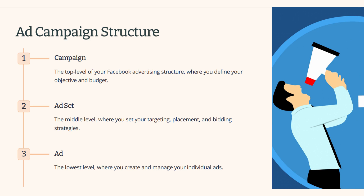At the middle level you set your ad set, which includes your targeting — for example, males in New Jersey between 25 and 35 years old who also like the gym. That's their interest. Your placement would be on Facebook, Instagram, and Messenger, and then you set your bidding strategy.